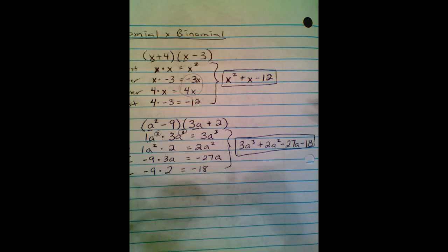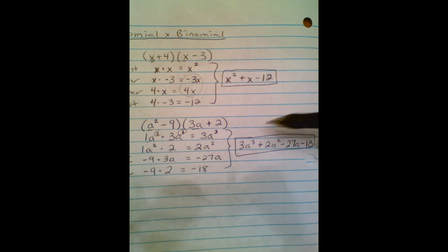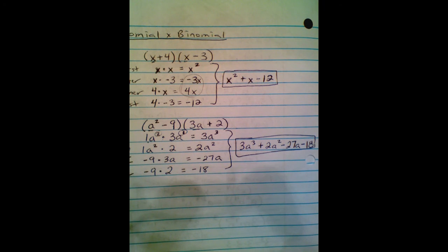I do 3a³ + 2a² - 27a - 18. Again, usually what we're going to see more often is the middle terms will both combine. But in this case, it just worked out so that they didn't.